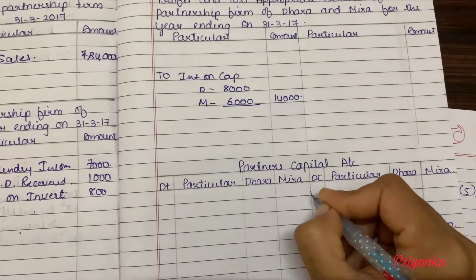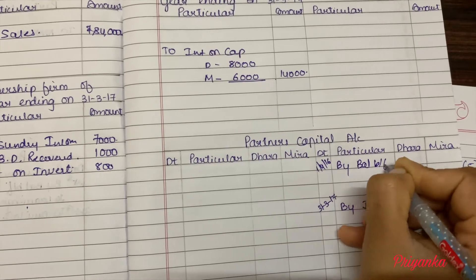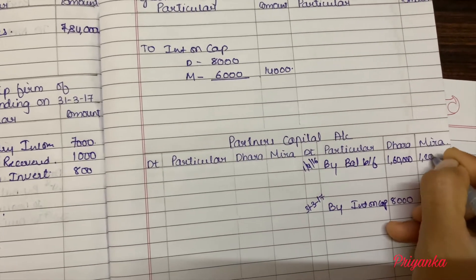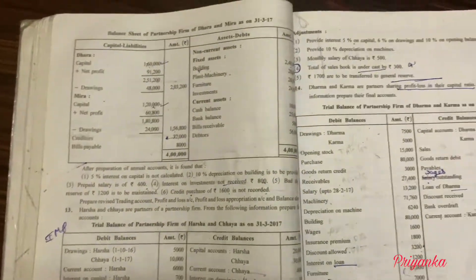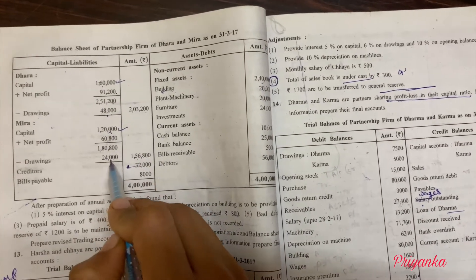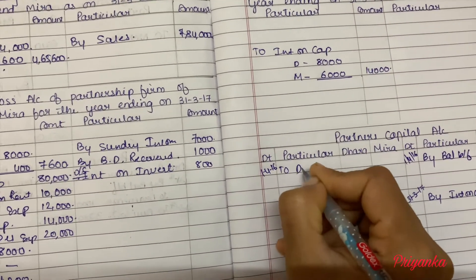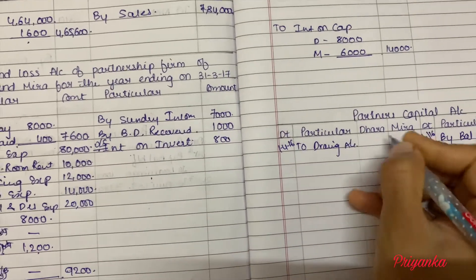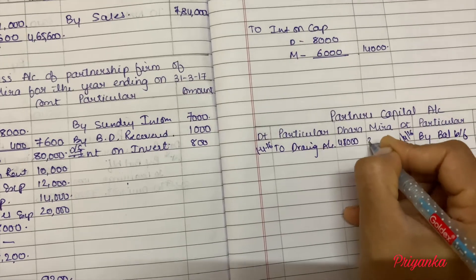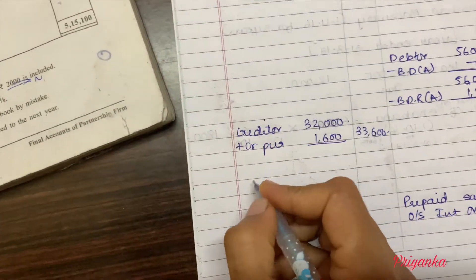Write first April 2016 — by balance brought forward — with one lakh sixty thousand for Dhara and one lakh twenty thousand for Mira. Next, the net profit is going to change. Take the drawing amount — forty-eight thousand and twenty-four thousand. First April 2016, drawings: 48,000 and 24,000. Next, creditor — also take bills payable 8,000 on your balance sheet liability side.